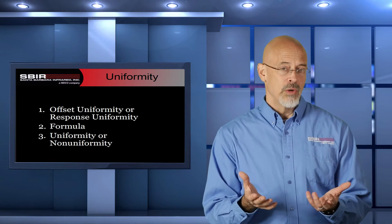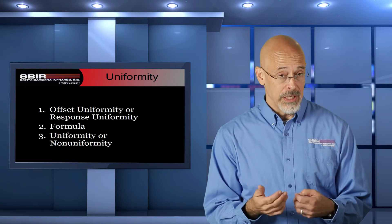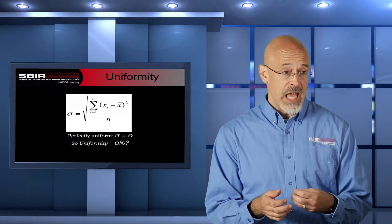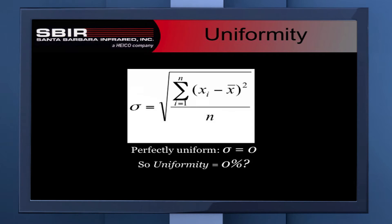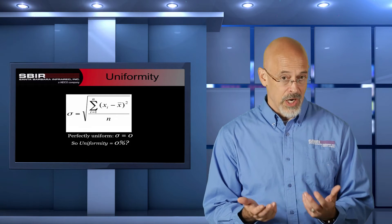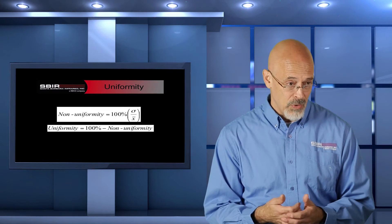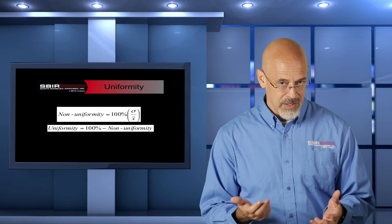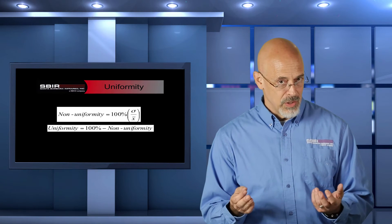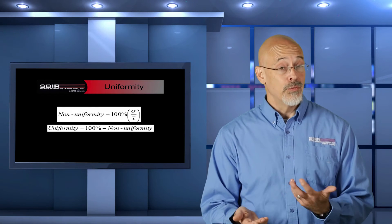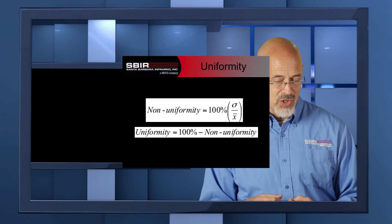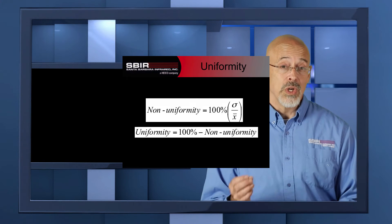The third ambiguity is the term itself: are we talking about uniformity or non-uniformity? We use uniformity as a catch-all, but the standard deviation is measuring variance — and if we had a perfectly uniform image, that standard deviation would be zero. So is our uniformity zero? As a term, that seems wrong. We use the term non-uniformity when referring to the standard deviation divided by the mean, because zero standard deviation means there's no non-uniformity, and uniformity is 100% minus the non-uniformity. But that's when you're being precise — it's not always referred to that way, so you need to be clear which term you're really referring to.